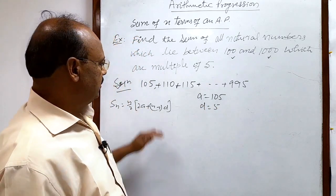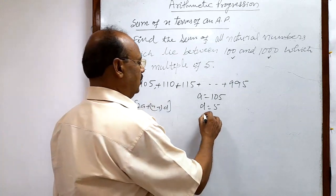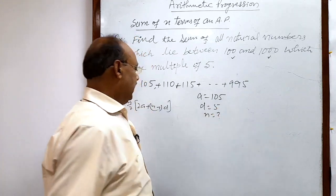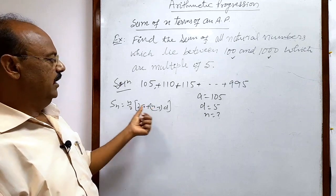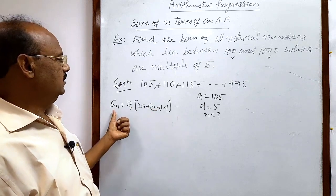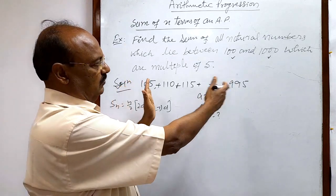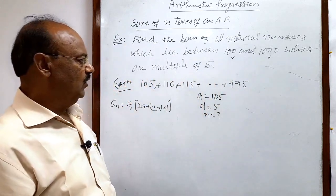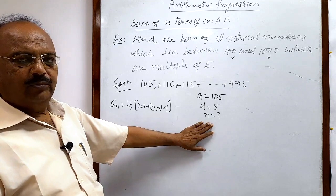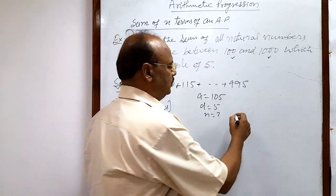Now we will try to find out number of terms first, so that we could put the values of n here, and after simplifying we will get Sn, sum of these terms. How we can get n, number of terms? We can use this formula here.